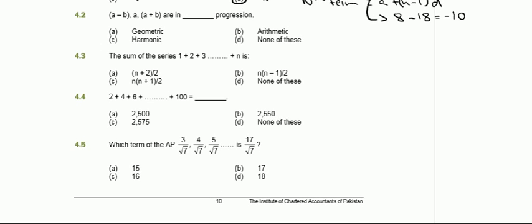Question 4.2 states that (a minus b), a, and (a plus b) are in some progression and we have to identify it. For a geometric progression, the second term divided by the first equals the third divided by the second. For an arithmetic progression, the second minus the first term equals the third minus the second term.